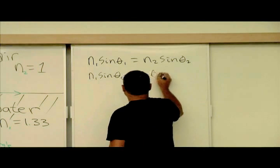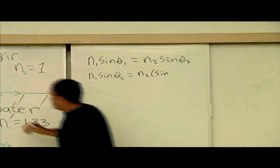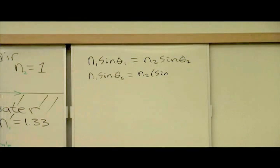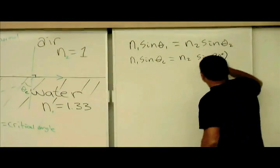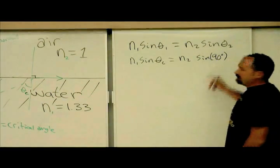And then that equals N2 sine, well, what is this angle? It's 90 degrees. So, it's sine of 90 degrees. Now, sine of 90 degrees is 1.